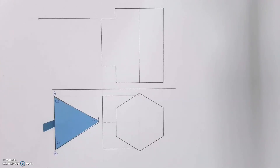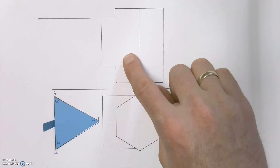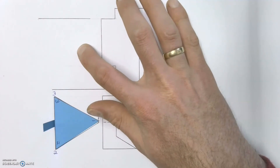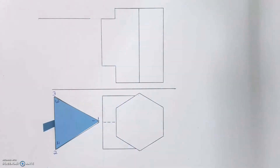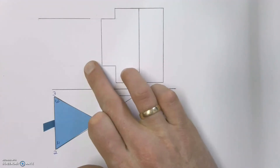In this video we're going to find the interpenetration curve between a triangular based prism and a hexagonal based prism. We're going to start off by completing the front view by putting in our second auxiliary view on the side over here on the left. Whenever we do these kinds of questions we need to have two auxiliary views — one in the top view and one in the front view.